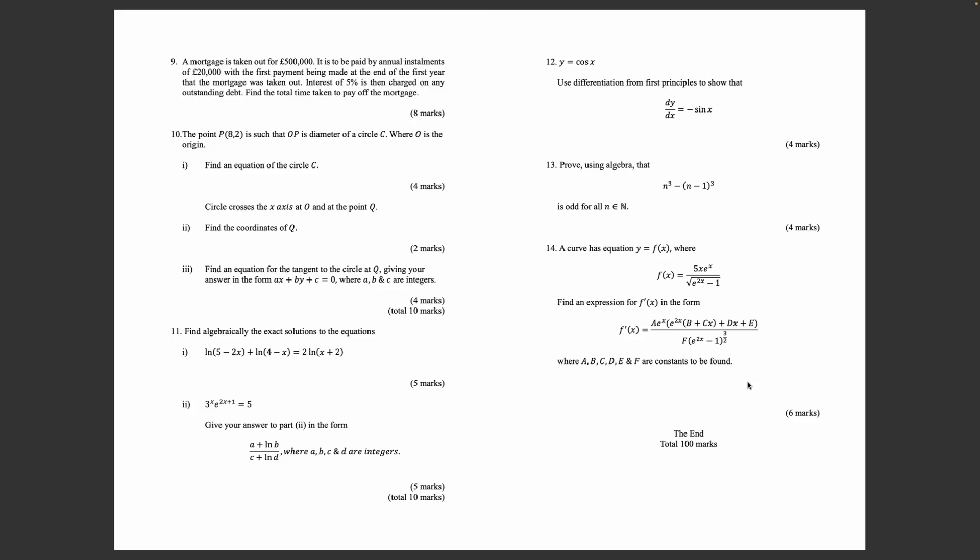Question 10: The point P(8, 2) is such that OP is a diameter of a circle C, where O is the origin. Part i: Find an equation of the circle C. The circle crosses the x-axis at O and at the point Q. Find the coordinates of Q. Part iii: Find an equation for the tangent to the circle at Q, giving your answer in the form ax + by + c = 0, where a, b, and c are integers.